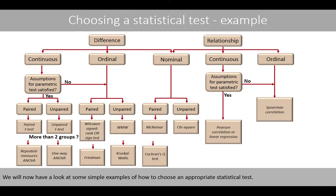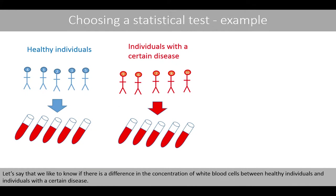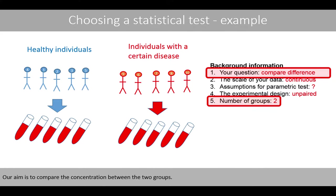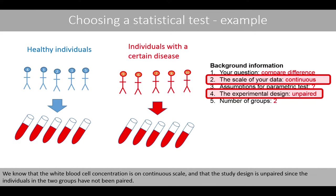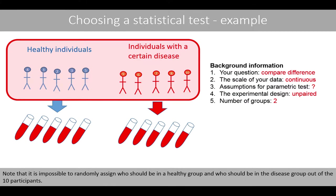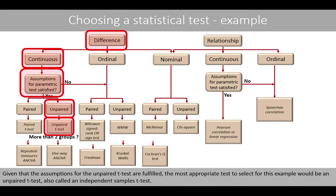We'll now look at some simple examples of how to choose an appropriate statistical test. Let's say we'd like to know if there is a difference in the concentration of white blood cells between healthy individuals and individuals with a certain disease. The white blood cell concentration is on continuous scale and the study design is unpaired, since the individuals in the two groups have not been paired. Given that the assumptions for the unpaired t-test are fulfilled, the most appropriate test would be an unpaired t-test, also called an independent samples t-test.